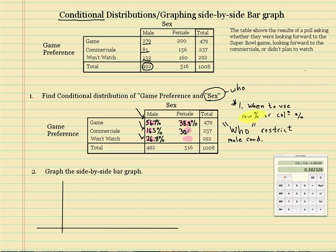And you really need to practice these. Just do some from the homework and everything and you should be fine. They do get a little confusing at times. The last one is 31%. So that's your conditional distribution of game preference and sex. Now what we could do is graph these percentages in what's called a side-by-side bar chart.